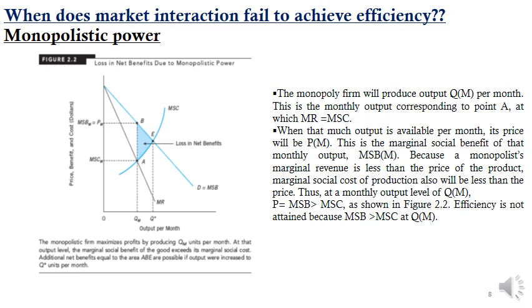Let's examine the impact of monopolistic power on efficient resource allocation. Monopolistic power occurs when a firm influences the price of a product by reducing output to a level at which price exceeds marginal cost of production, causing markets to produce inefficient levels of output. In Figure 2.2, the demand curve for the monopolistic product reflects the marginal social benefit of possible levels of output, while the monopolist's marginal private costs reflect the marginal social costs.